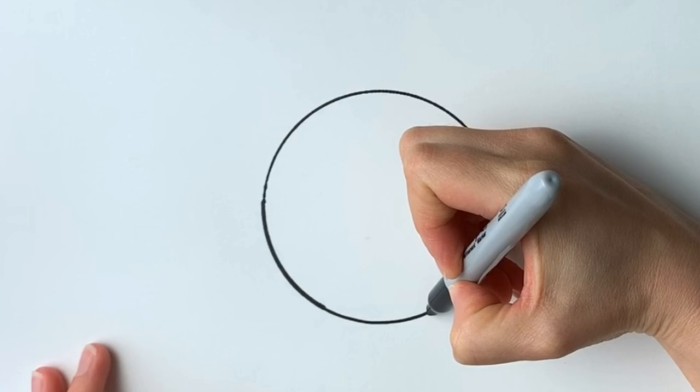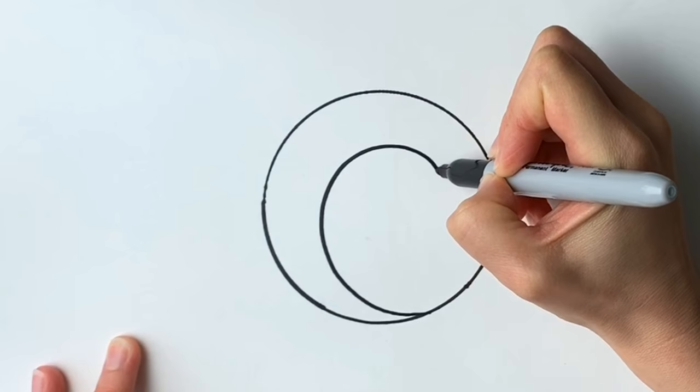Next we're going to be drawing a spiral so just start anywhere in the circle and just do a spiral motion all the way to the middle just like that.